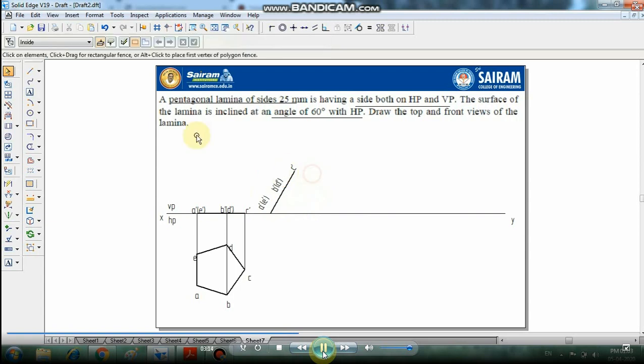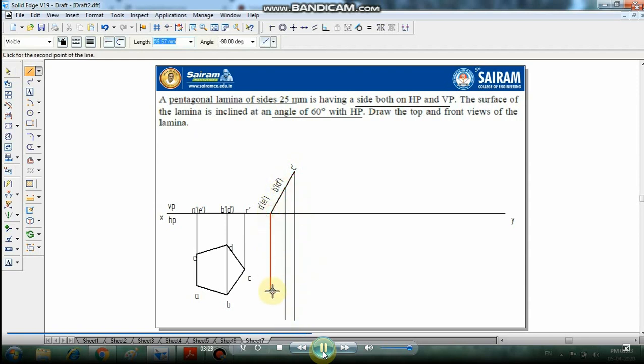Draw the projection lines, vertical lines from this edge and from this edge. Draw a to a dash where it meets, b to b dash where it meets, c to c dash where it meets, d to d dash, e to e dash. Mention the points where the intersection happens.